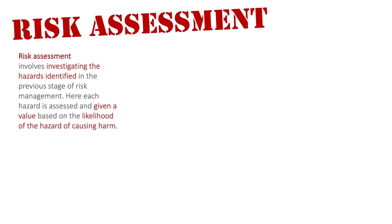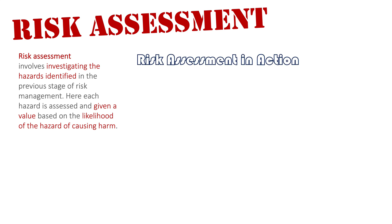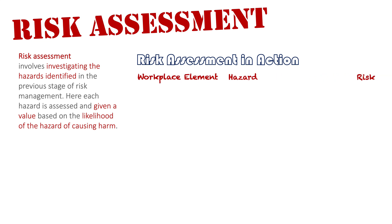We're going to have a brief overview of what that might mean. We've been identifying all these hazards, and now we have to assess them for their likelihood of causing harm to people. We'll look at the workplace element, the hazard associated with it, the risk related to it, and what risk level it might have.